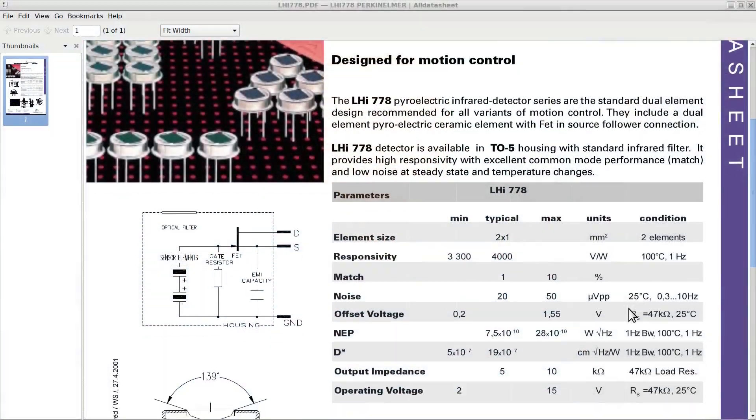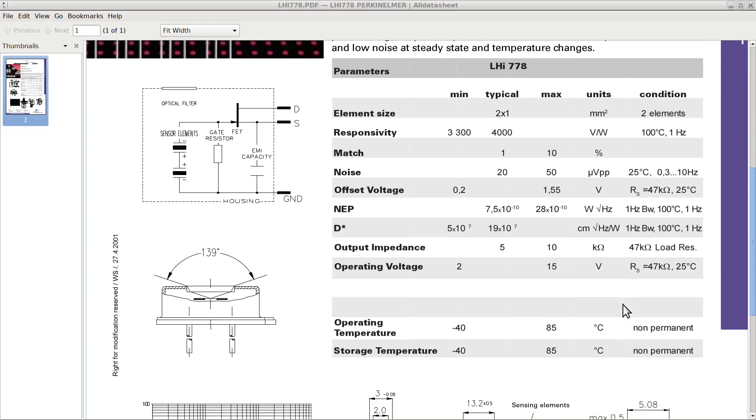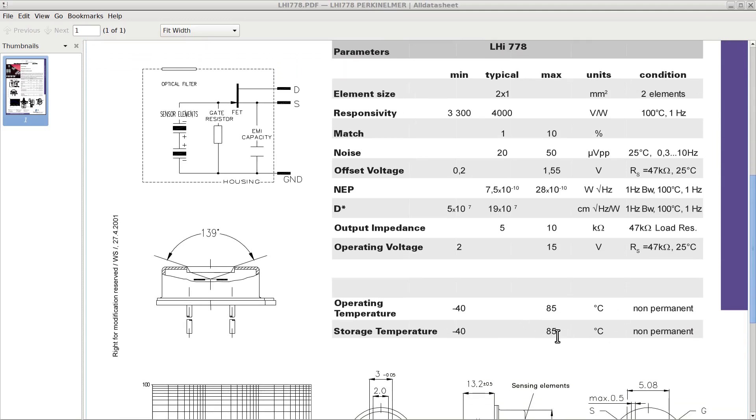The PID used in this device is called LHI 778, and is capable of detecting infrared emissions over a background noise of up to 85 degrees Celsius.